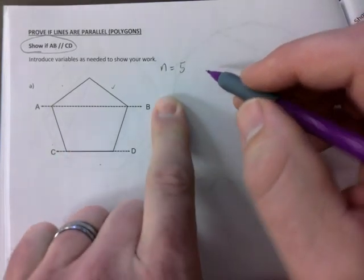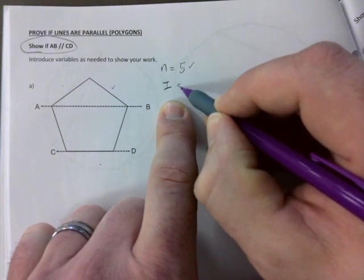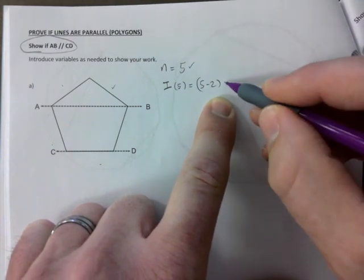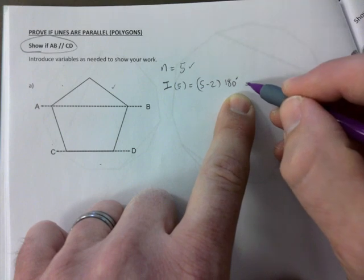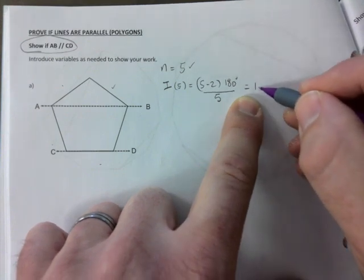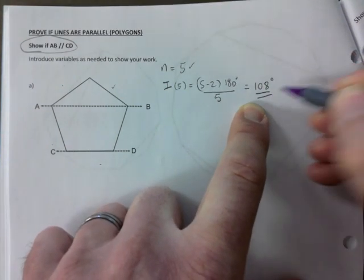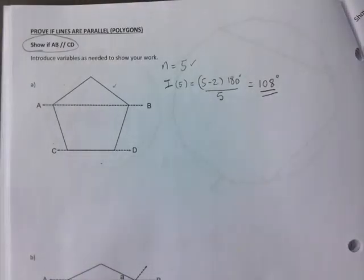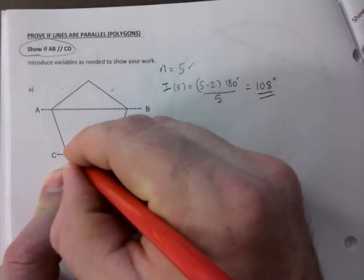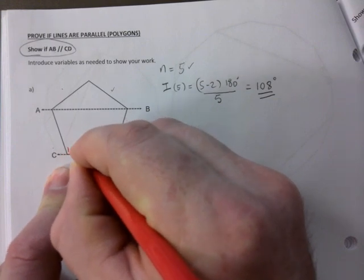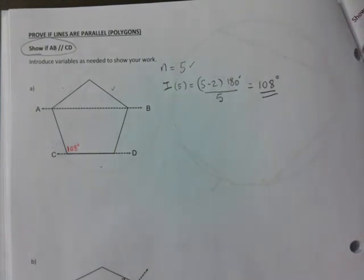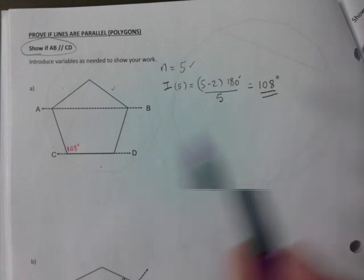Which means we can find the interior angle of that polygon. Let's go ahead and do that next. The interior angle of a five-sided polygon would be five minus two times 180 divided by five. So that's 540 divided by five, that's 108. I'm gonna put this 108 in here conveniently.